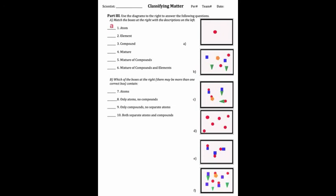A collection of atoms is called an element. The box that shows an element is D. A compound or molecule is when atoms bond together. Which one of these is just a compound? E. A mixture is when atoms are in the same container but they are not forming a chemical reaction — they're not bonding together. The box that shows that is B. A mixture of compounds means you have elements that have bonded together with different kinds in there. The one that shows that is C.